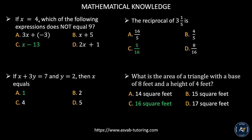If x equals 4, which of the following expressions does NOT equal 9? Plug in 4: 3 times 4 minus 3 equals 9 ✓; 4 plus 5 equals 9 ✓; 2 times 4 plus 1 equals 9 ✓; but 4 minus 13 gives negative 9 — that is not equal to 9. So that is the correct answer.